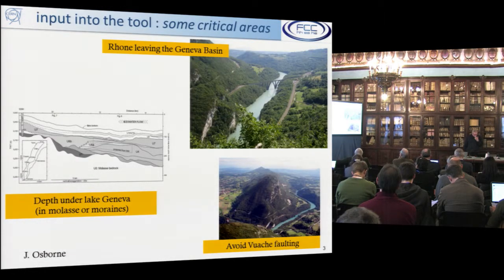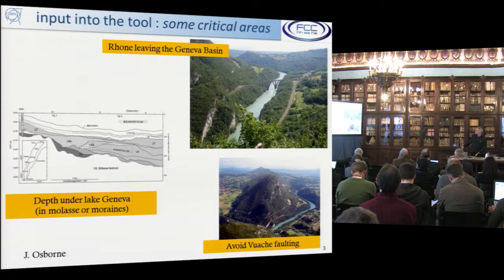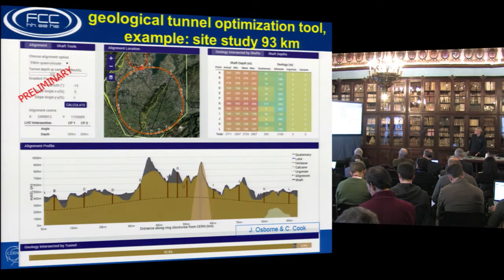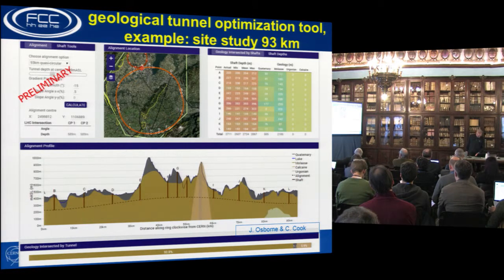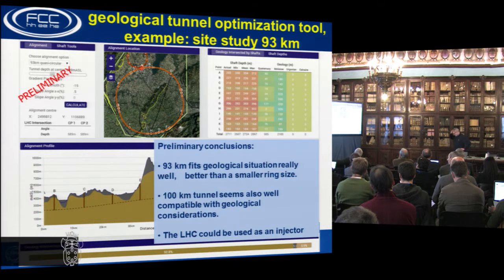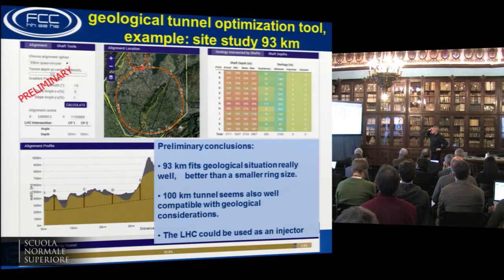CERN's CE group also gave some input into the database for this code, including difficult regions. The example already shown is a site study with a 93-kilometer circumference. Preliminary conclusions are that the 93-kilometer tunnel fits the geological situation really well — and it's actually better than a smaller ring size.